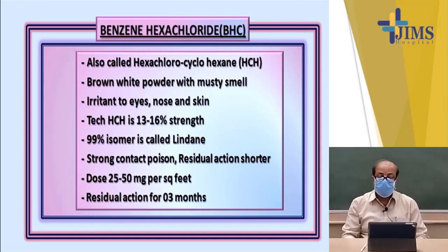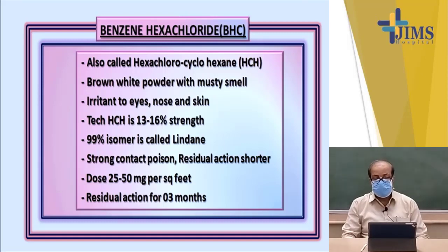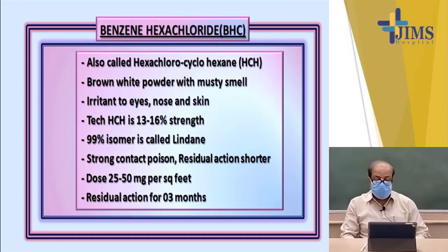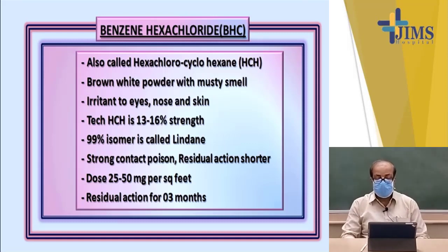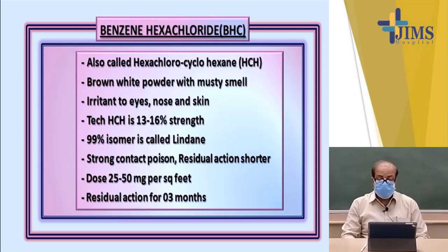Benzene hexachloride, or BHC, is also known as HCH or hexachlorocyclohexane — they are the same compound. They are a brownish-white powder, irritant to the eyes and nose, and contain around 13 to 16 percent active ingredient. The 99% isomer is known as lindane. Lindane is more active and more toxic than BHC. It is a strong contact poison, but the residual action is shorter than DDT — around 30 to 45 days. The dose is 25 to 50 milligrams per square foot, with residual action causing insect death for up to three months.